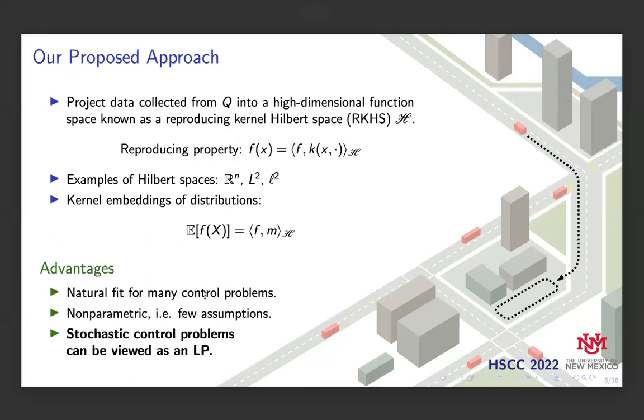Our proposed approach is to project the data into a high-dimensional space of functions known as a reproducing kernel Hilbert space, or an RKHS. The RKHS has a special property known as the reproducing property that allows us to evaluate a function. The main idea we use is called kernel embeddings of distributions, which allows us to embed the integral operator of a stochastic kernel in an RKHS. We can then use the embedding to approximate the expectations and probabilities in the stochastic optimal control problem.